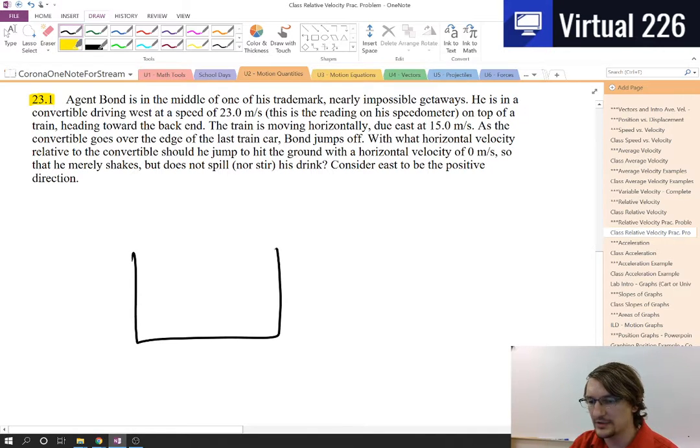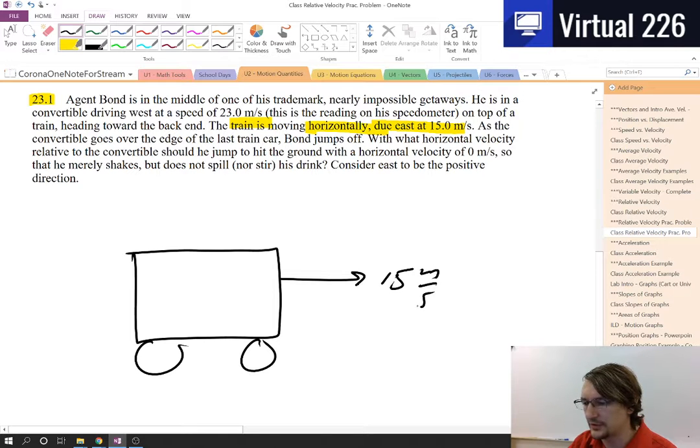So here is the train, poorly drawn by yours truly. And the train is moving east at 15 meters per second. So there's the train moving horizontally east at 15 meters per second. So here's the train, choo choo, 15 meters per second.